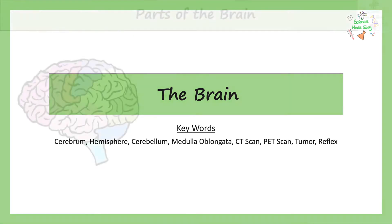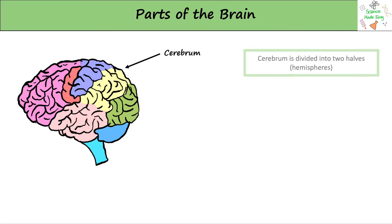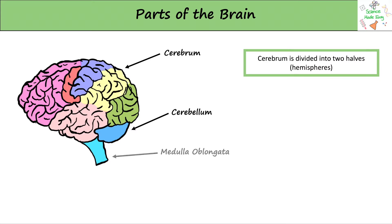There are lots of parts of the brain, all responsible for different functions. The main bulk of the brain is made up by the cerebrum, which is divided into two identical hemispheres. We have the cerebellum at the back, which controls all of our motor skills, such as walking and talking. The medulla oblongata controls unconscious processes, such as breathing.